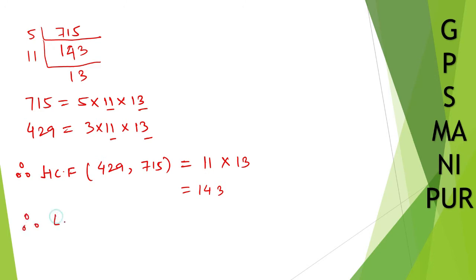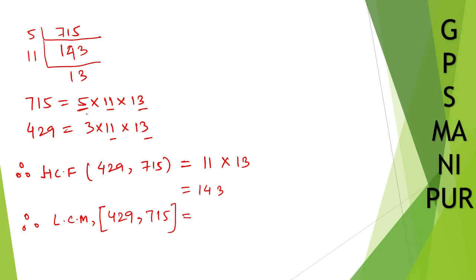Now let us find LCM. LCM of 429 and 715. For LCM, start with 3 — take 3, then take 5, then take 11 (since 11 and 11 are common, take only one 11), and 13 and 13 are common so take only one 13.